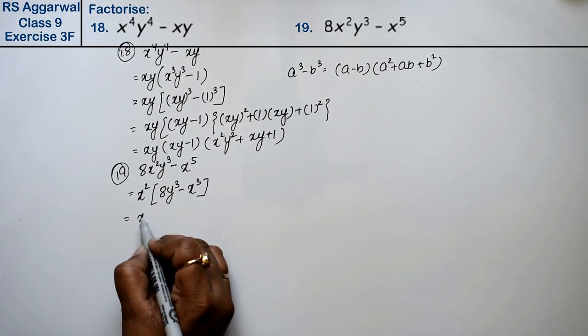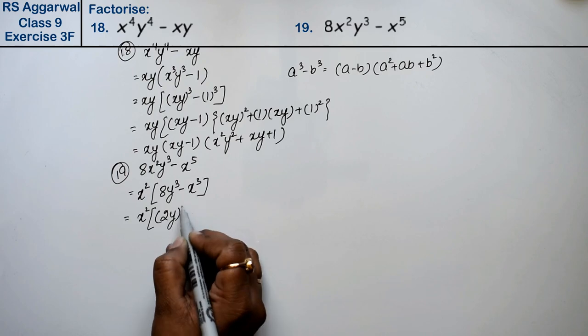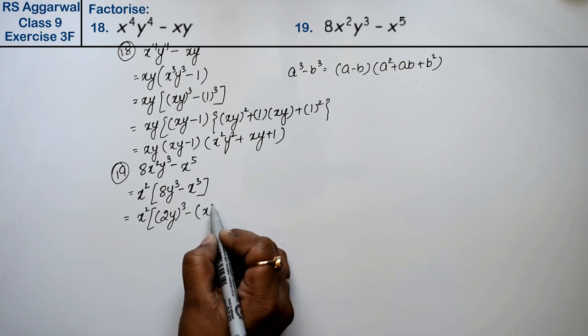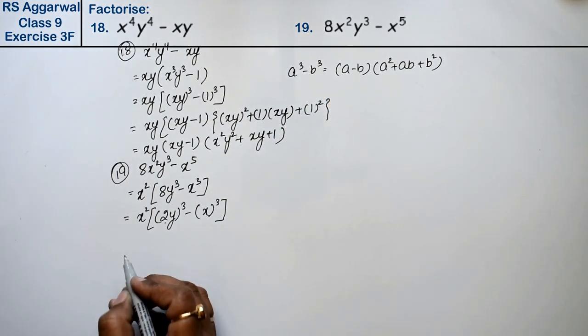We write 2y's whole cube minus x's whole cube. Now a is 2y and b is x.